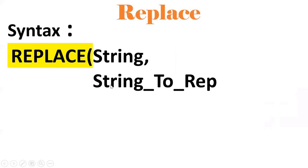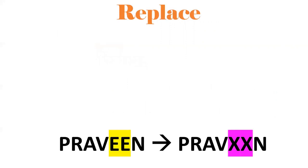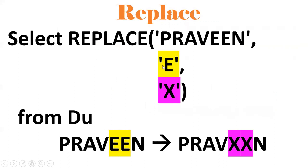Next is the REPLACE function — one of the string functions. The syntax is: REPLACE(string1, string2, replace_string). You pass the original string, then the substring you want to replace, then what it should be replaced with. For example, the keyword is 'pravin' and I want to replace 'e' with 'x'. So: REPLACE('pravin', 'e', 'x') FROM DUAL — wherever 'e' appears it gets replaced with 'x'.